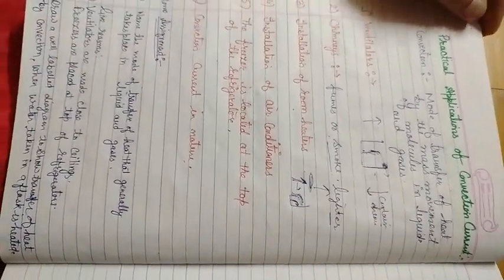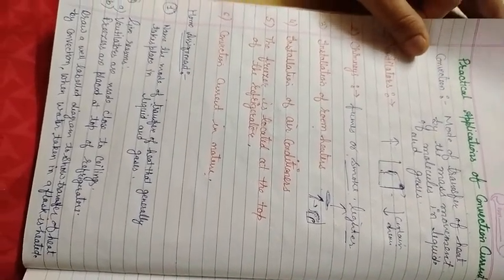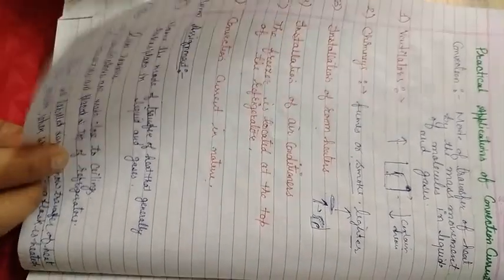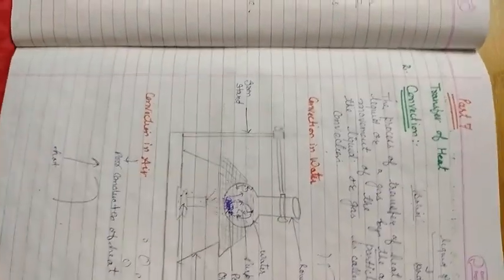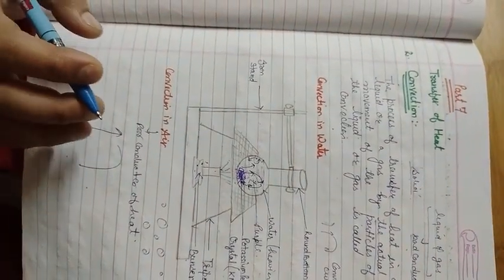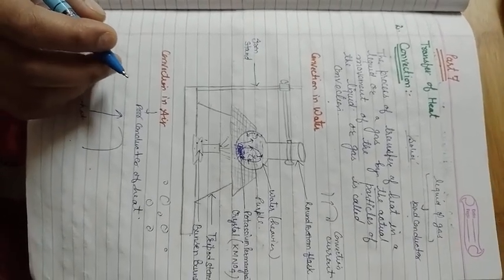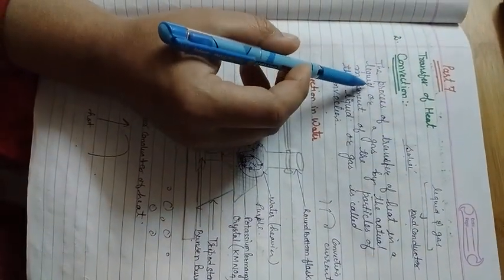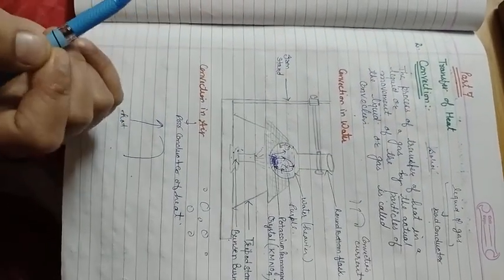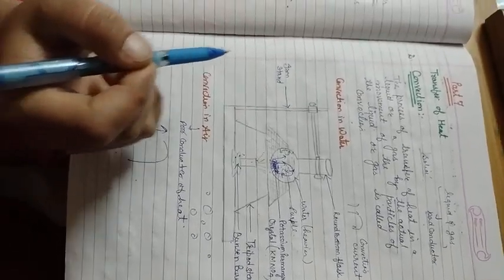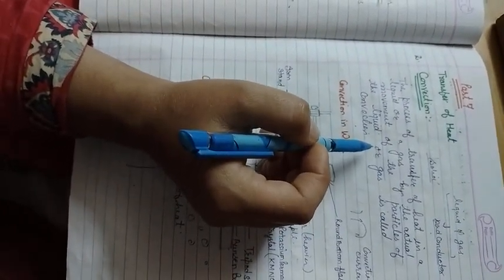Hello students, we are discussing lesson number 5 of class 7, that is heat. We were discussing the modes of transfer of heat. In our previous video we discussed the second mode, that is convection. Let's recapitulate: most liquids and gases are bad conductors of heat and they cannot be heated by conduction, so liquids and gases are heated by another process called convection. Convection is the process of transfer of heat in a liquid or gas by the actual movement of the particles.